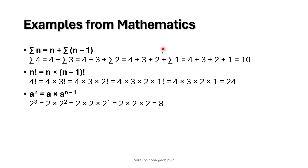Another example: factorial of n. Factorial of n can be written as n into factorial of n minus 1. For example, factorial of 4 is 4 into factorial of 3; factorial of 3 is 3 into factorial of 2; factorial of 2 is 2 into factorial of 1. For factorial of 1 we have a direct answer which is 1, so we replace it and the recursion stops there.